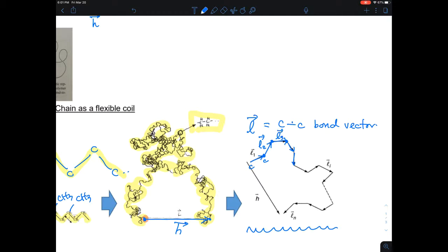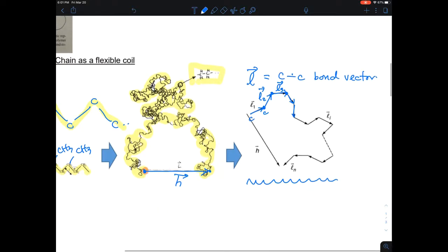And then you continue to do this change in the, make its position of each bond vectors. And at the end, you can see that this is an N bond. So this is a polymer chain with N carbon and carbon bonds, right?